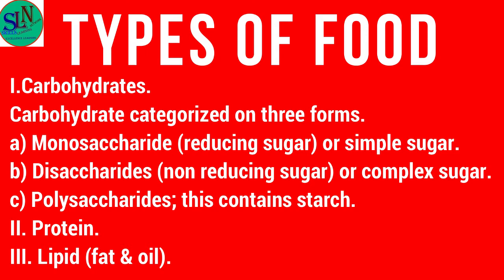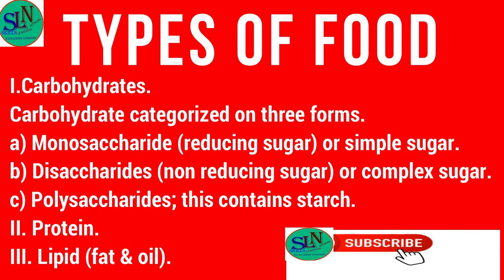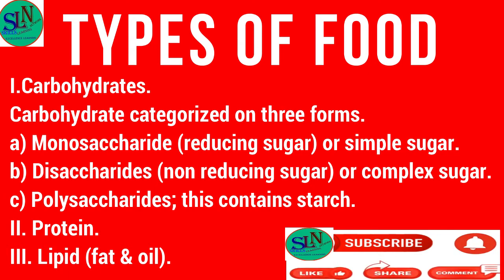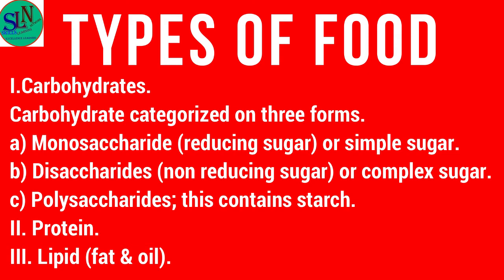The types of food we usually have are carbohydrates, which are categorized in three forms: monosaccharides, which are reducing sugars or simple sugars; disaccharides, which are non-reducing sugars or complex sugars; and polysaccharides, which contain starch. The second type of food is protein, and the third is lipid, which contains fat and oil in different forms.